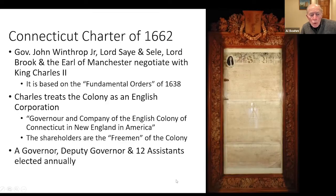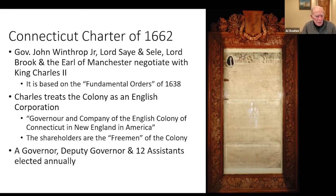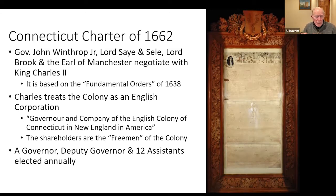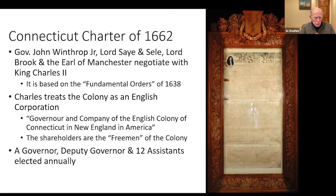In 1662 our governor was John Whitbrook Jr. — his father was the governor of Massachusetts Bay. Lord Say and Seal and Lord Brooke joined him; they really are the 'Say' and 'Brooke' of Saybrook. They never left London but held a patent for that community. They negotiate with Charles II and he treats the colony as an English corporation, allowing them to have a governor and a company, naming us 'the Governor and Company of the English Colony of Connecticut in New England in America.'